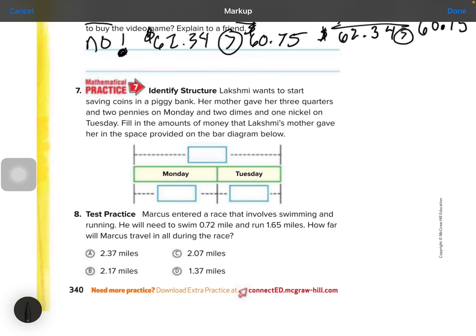Number 7. Identify structure. Lakishima wants to start saving coins in a piggy bank. Her mother gave her 3 quarters. So that is 25 cents times 3, and that equals 75 cents. And 2 pennies on Monday. Plus 2 pennies, right? 5, 6, 7. So she gave her that much on Monday, right? So we can put that money right here. $0.77. That's how much she gave her on Monday. We need to add a 0 here and a dollar sign.